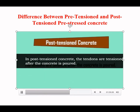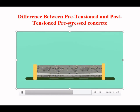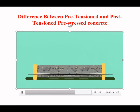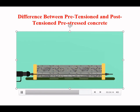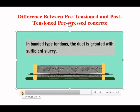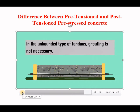In post-tensioned concrete, the tendons are tensioned after the concrete is poured. Initially, the concrete is cast around the sheathing; ducts are formed in the concrete in which tendons are placed. After the concrete is hardened, the tendons are tensioned by hydraulic jacks and anchored. In the bonded type, the duct is grouted with cement slurry. In the unbonded type, grouting is not necessary.